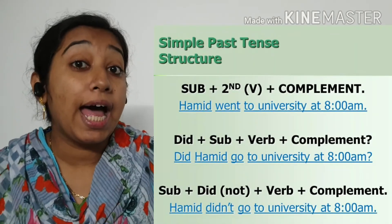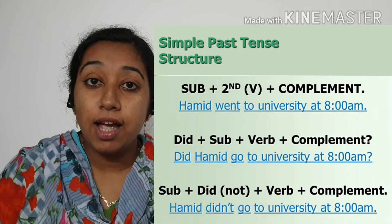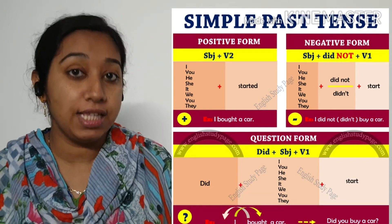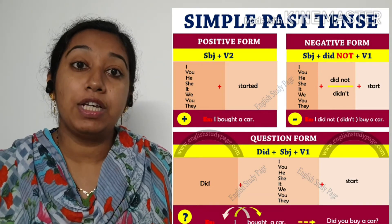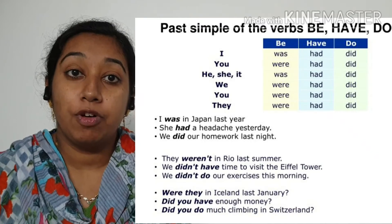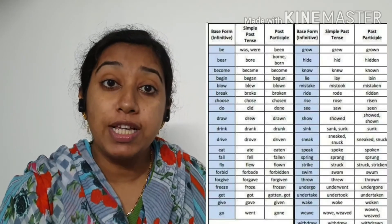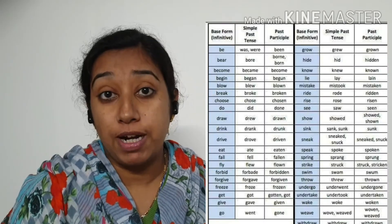In the following slides you will see the structure as well as the formation of the past tenses. If the verb is 'do,' it will be 'did.' If it is 'is,' it is going to be 'was.' It is important to remember the verbs used in different tenses. There are three verb forms — verb 1 is the present tense, verb 2 is the past tense, and verb 3 is the past participle.